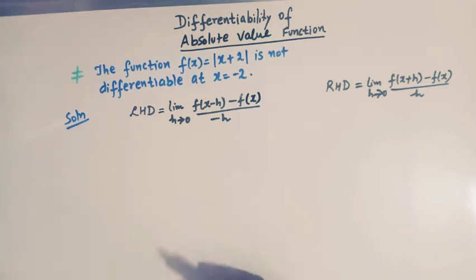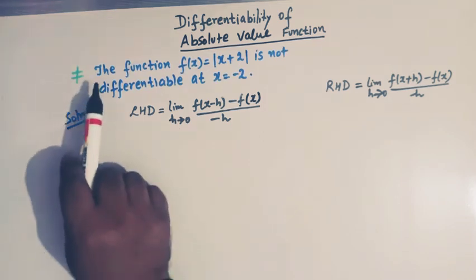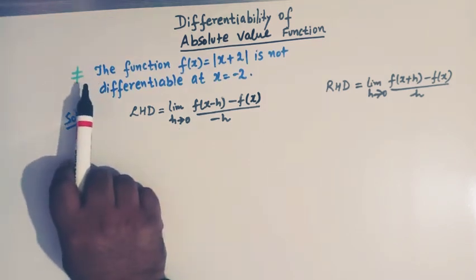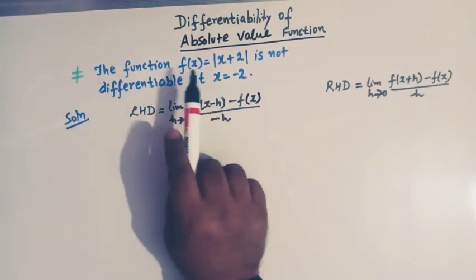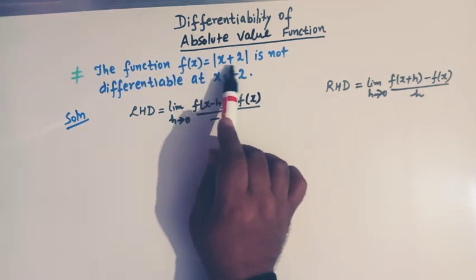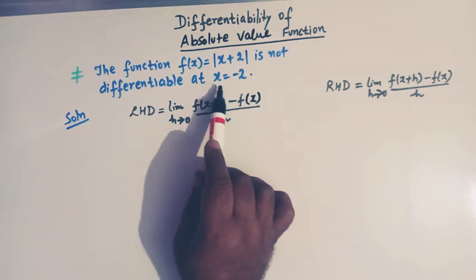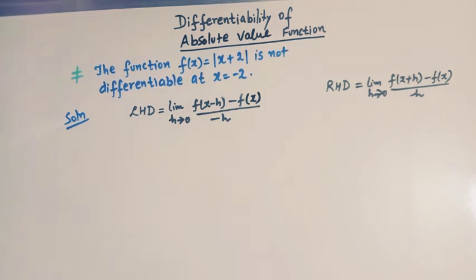Hello viewers. In today's class we are going to discuss the differentiability of absolute value function. We will discuss the question: the function f(x) = |x + 2| is not differentiable at x = -2.